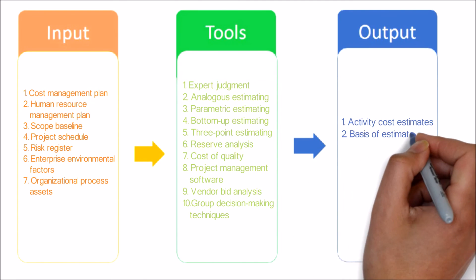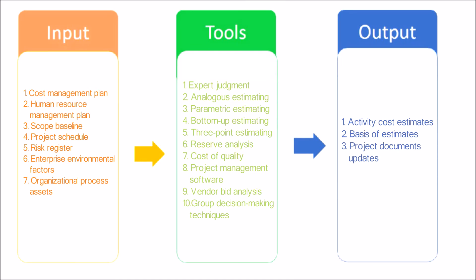Now let's see the output of this process. Activity cost estimates are quantitative assessments of the probable costs required to complete project work. Basis of estimates: the amount and type of additional details supporting the cost estimate vary by application area. Project documents updates: project documents that may be updated include, but are not limited to, the risk register.